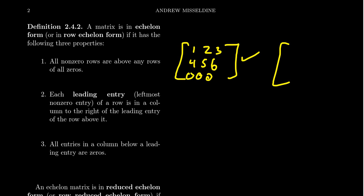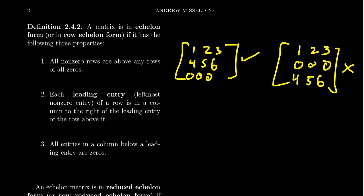Conversely, a matrix like [1, 2, 3; 0, 0, 0; 4, 5, 6] is in violation of condition one because there is a row of zeros that is not at the bottom — the row [4, 5, 6] should be above it. With elementary row operations, that's an easy fix: you can use the interchange operation to swap the rows, but we'll talk about that later.